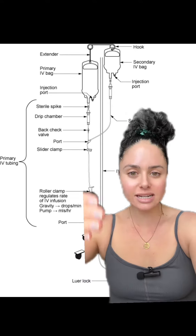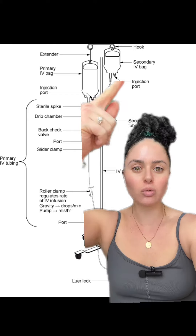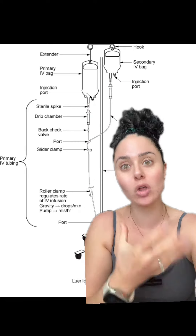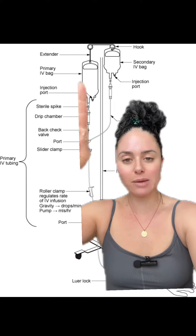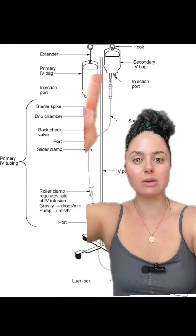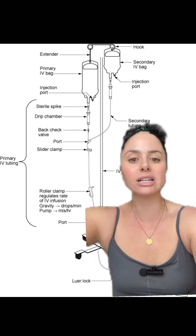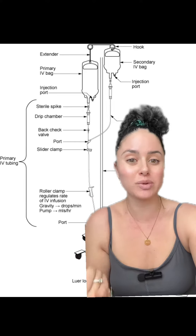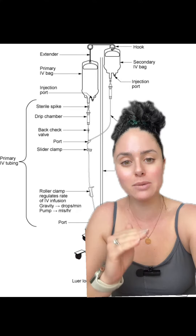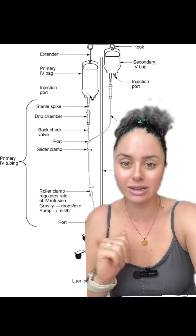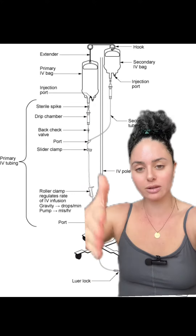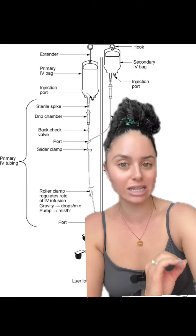This is an example of a primary infusion with a secondary infusion — secondary infusions are sometimes called IV piggyback. The primary infusion is the main infusion, so this may be your IV fluid running continuously. It could also be a TKO — to keep open — or a KVO — keep vein open — which are usually running at slower rates. Primary infusions typically run continuously.